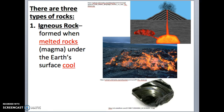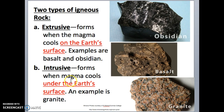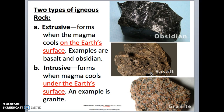There are actually two types of igneous rock. The first type is called extrusive, and extrusive rocks form when magma cools on the Earth's surface. Some examples of extrusive rocks are basalt and obsidian. The second type of igneous rock is intrusive igneous rock.